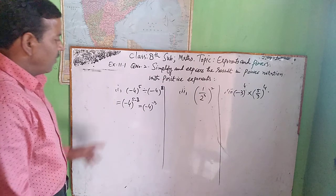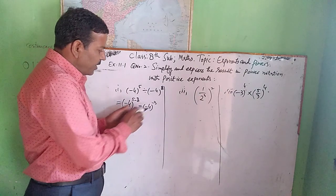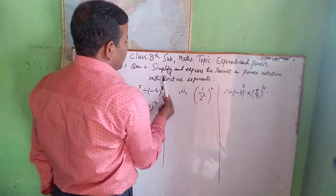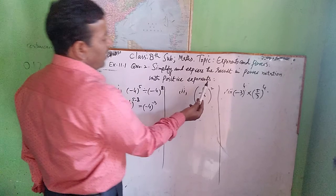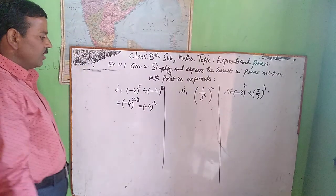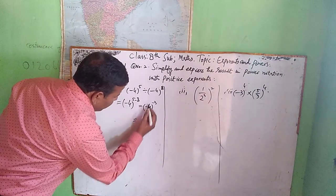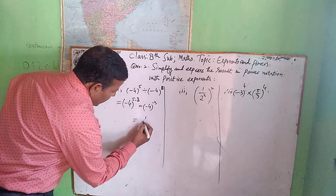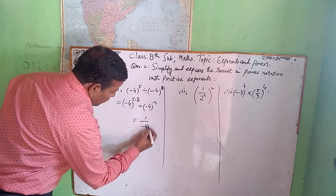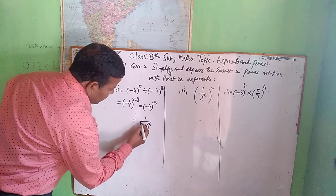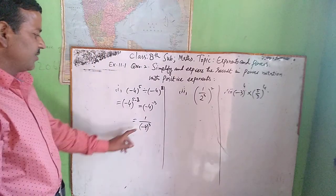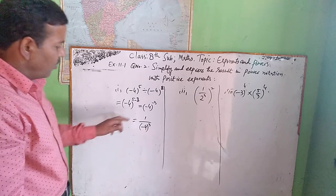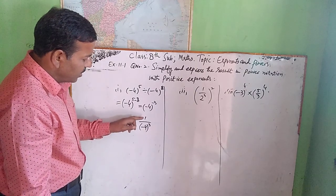Now this exponent is not positive. We have to make it positive because the question says the notation should be with a positive exponent. So we write it as a reciprocal: 1 upon minus 4 raised to power 3.